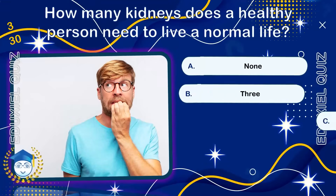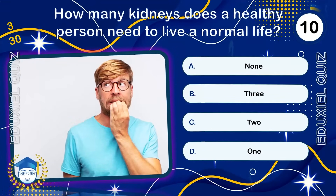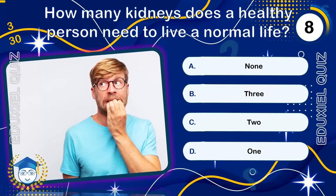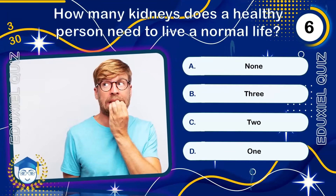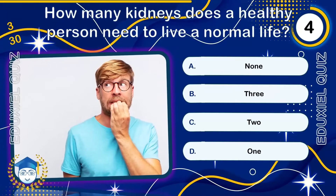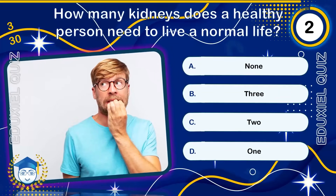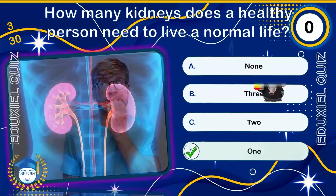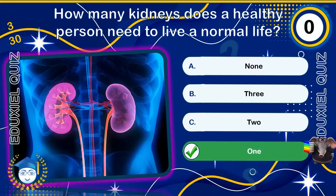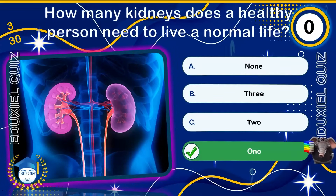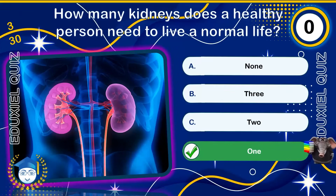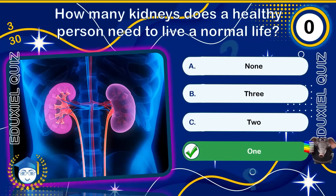How many kidneys does a healthy person need to live a normal life? Humans can live with just one kidney, as a single kidney can filter enough blood to maintain normal body functions. Many kidney donors live long, healthy lives with only one organ. This highlights the remarkable redundancy and adaptability of the human body.